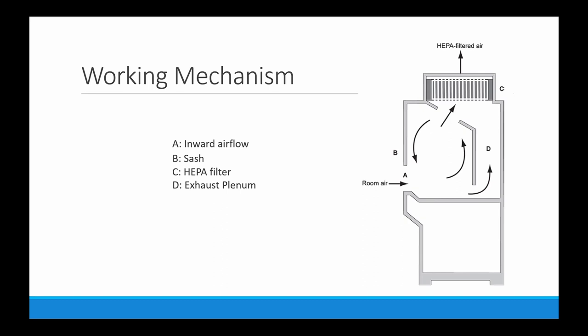The working mechanism is simple and indicated by arrows. The negative pressure inside allows inward movement of air through the open sash. Room air enters from point A, and B indicates the sash. After inward movement, air exits to the external environment but is purified before leaving by the HEPA filter, labeled as C, and D indicates the exhaust plenum.